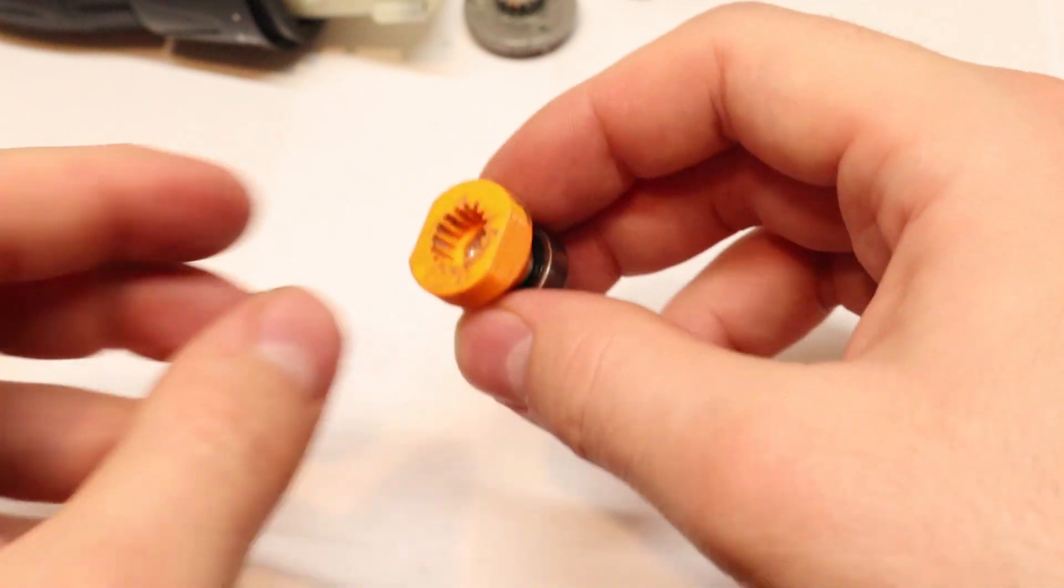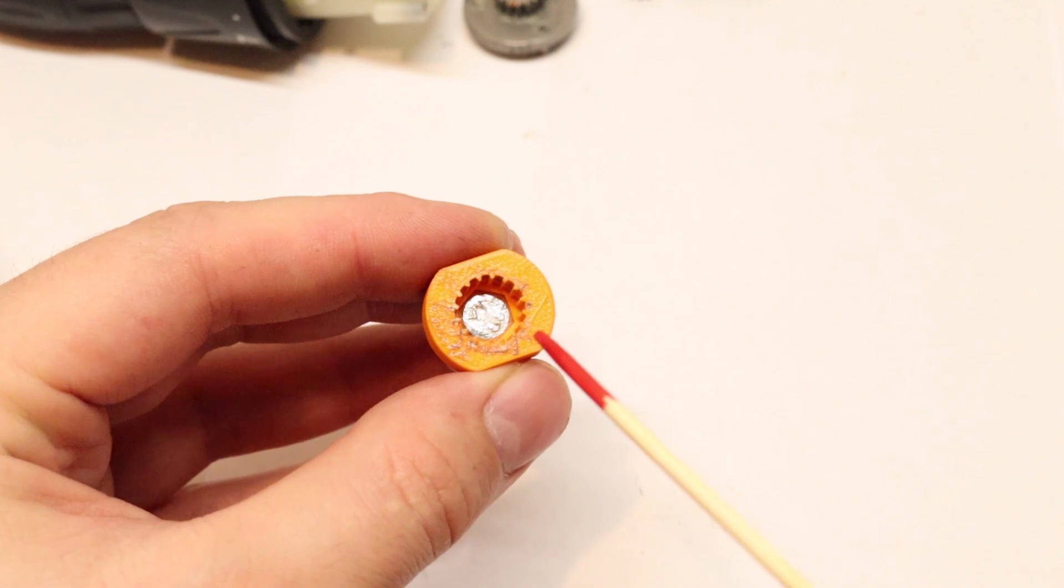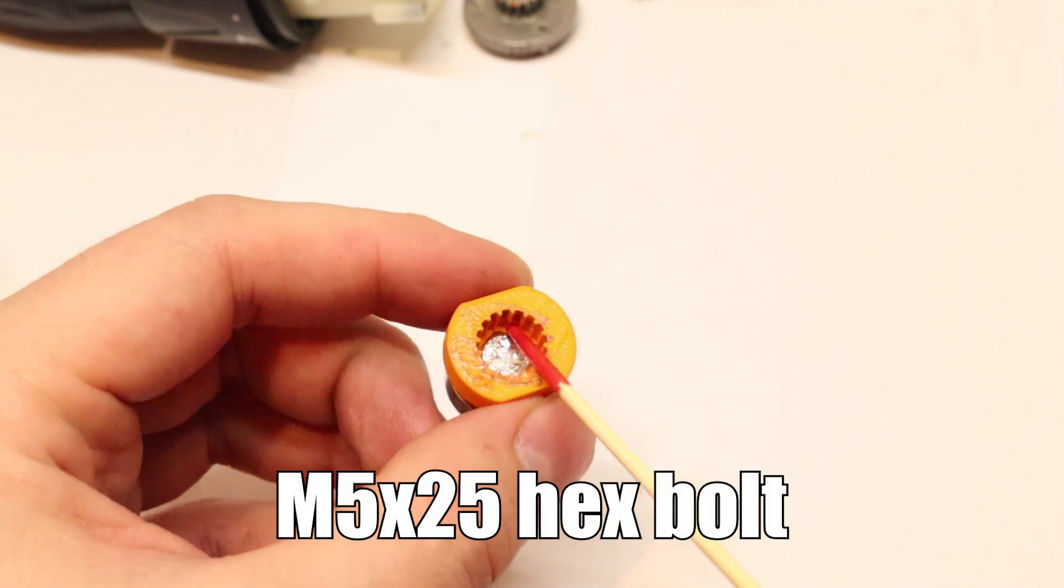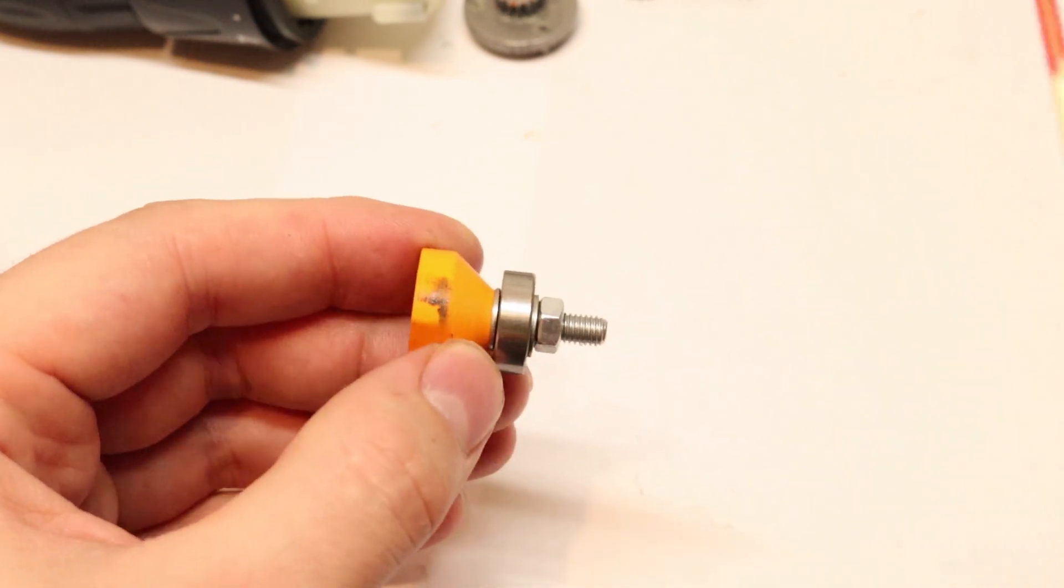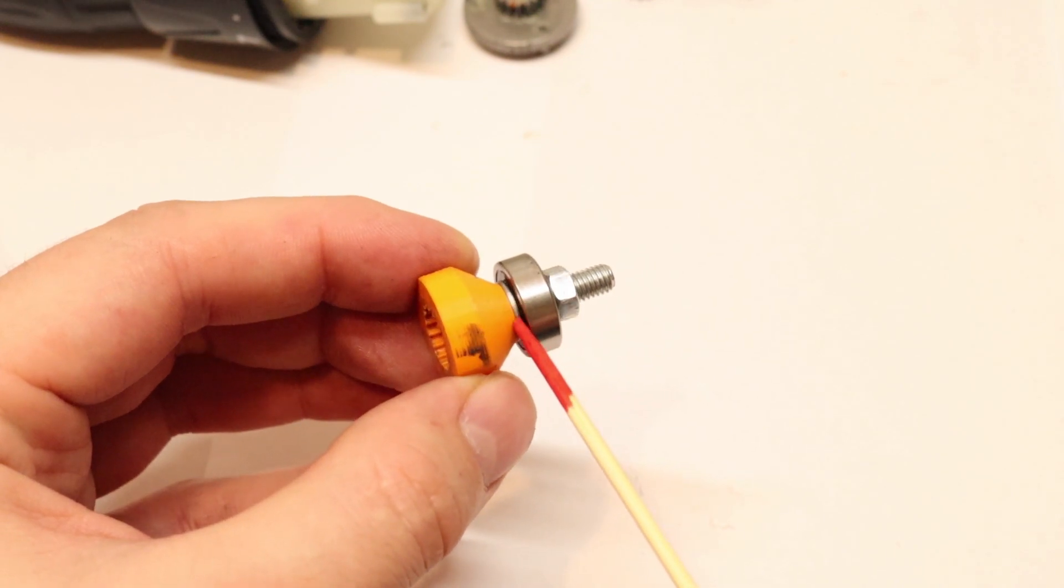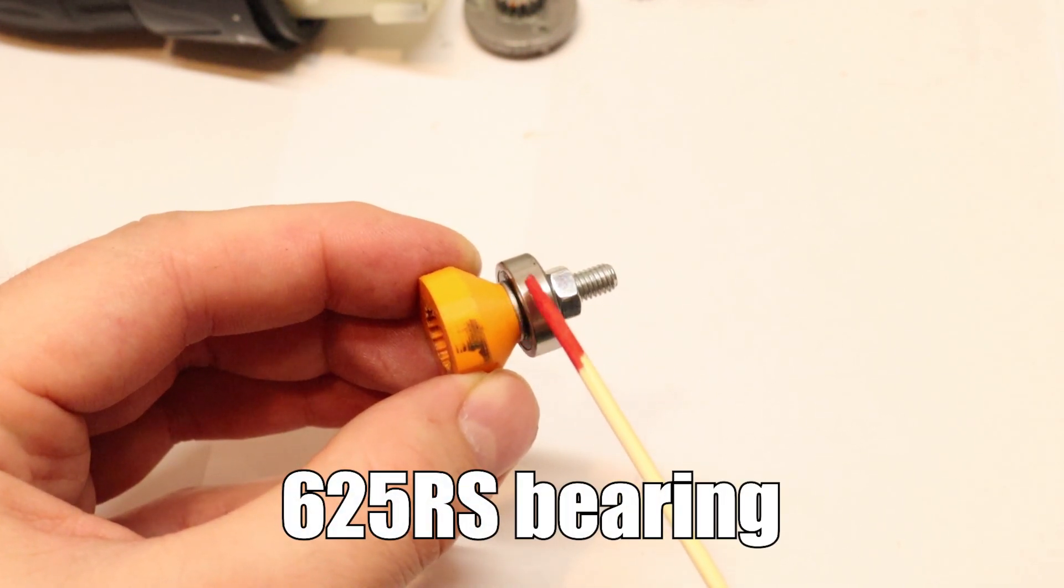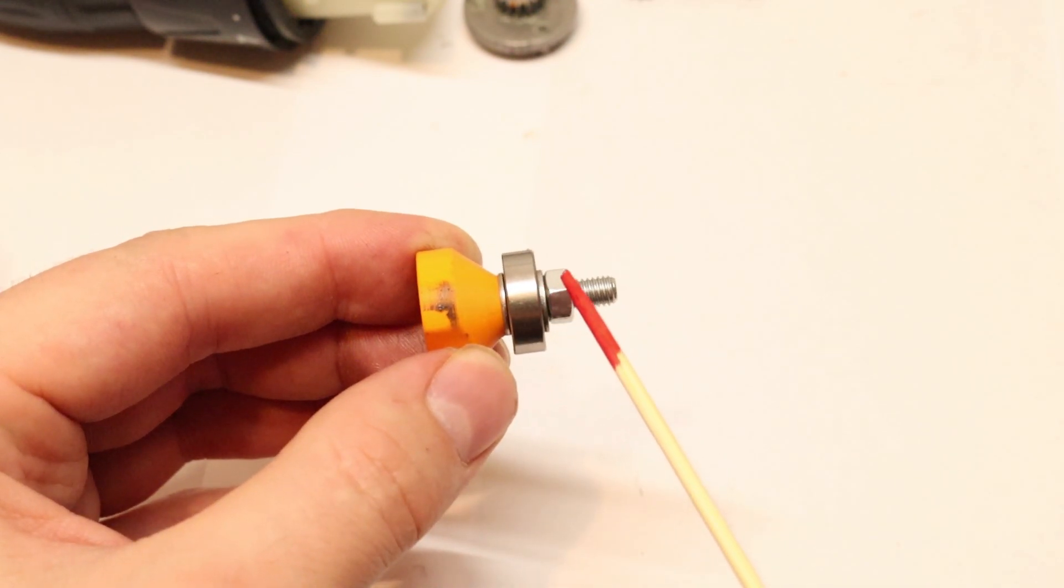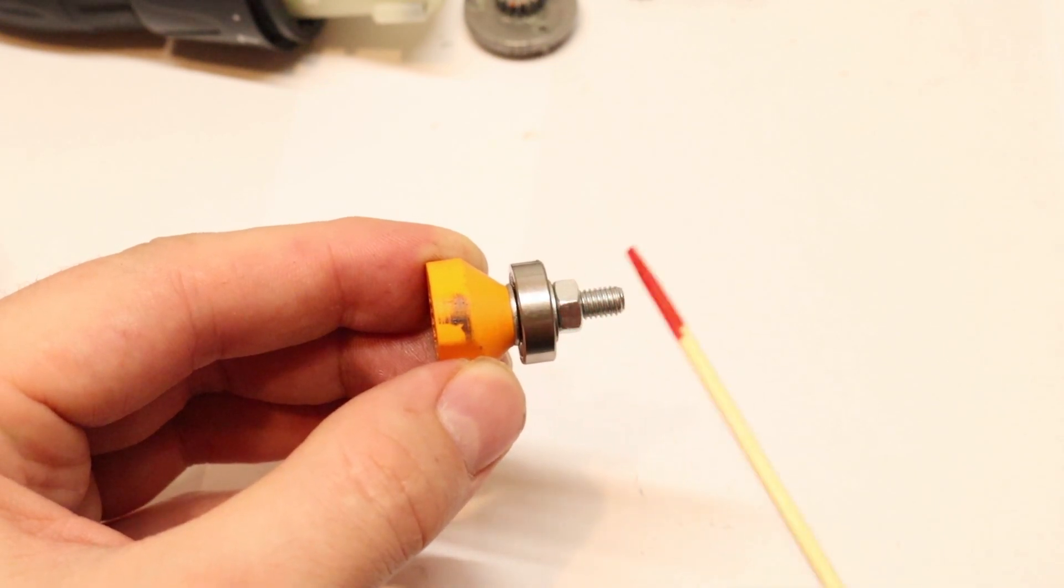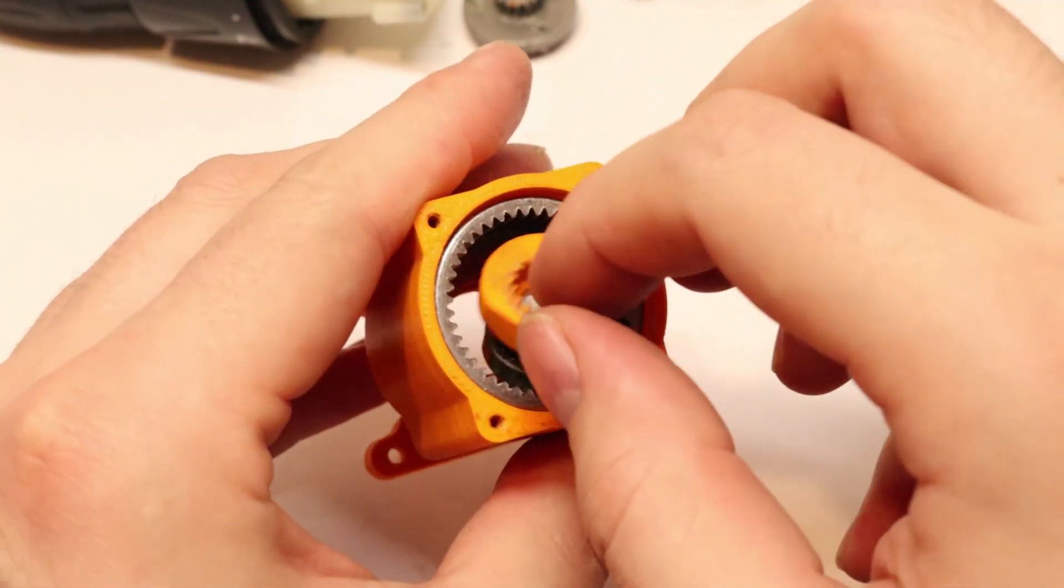Then we're moving to this preassembly that I already made. You insert an M5 bolt - I'll include the dimensions in the description. Add a washer between the bearing and the plastic. Bearing, washer, M5, nut, then tighten this. Then insert that assembly in here.